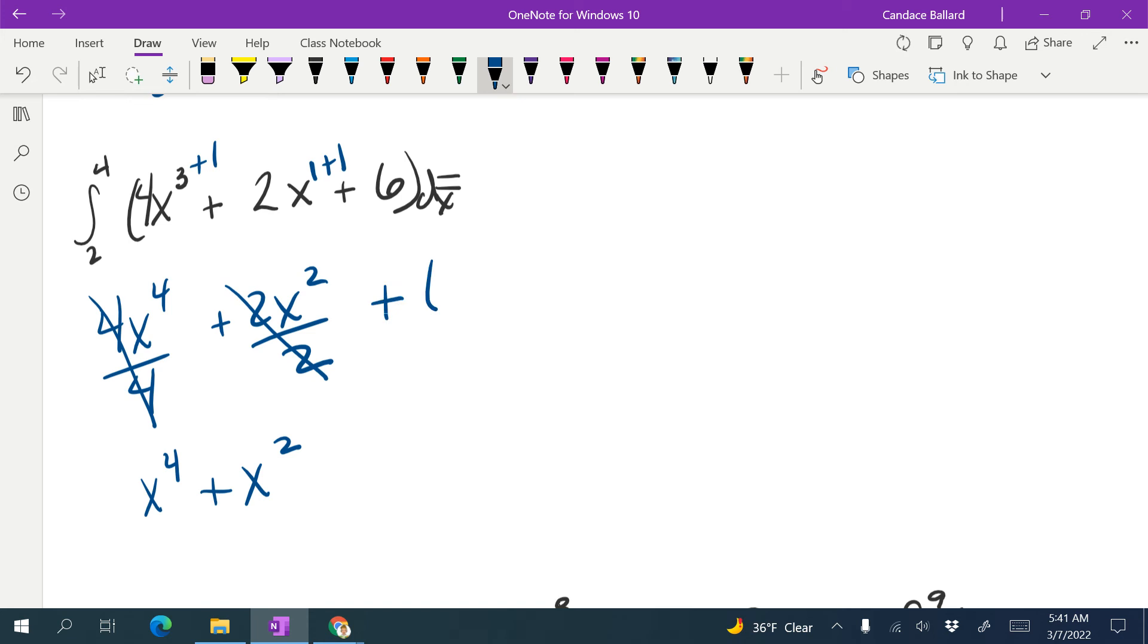Remember when we just have a number at the end, we just put an x on the end, so it would just be 6x. It's a definite integral, so we don't use plus C. We're going to put those numbers.